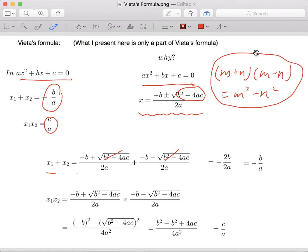In this case, we have negative b equals m and square root of the discriminant equals n, which gives us negative b squared minus the discriminant squared over 4a squared. If we expand this, we have b squared minus b squared plus 4ac over 4a squared. The b squared cancels out, which gives us 4ac over 4a squared. You can easily see that the 4a also cancels out, which leaves us c over a.